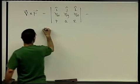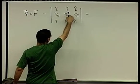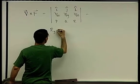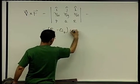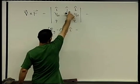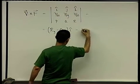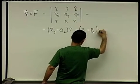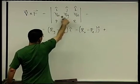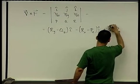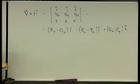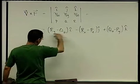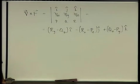Expanding the determinant: in the i component we get r_y minus q_z. In the j component we get minus (r_x minus p_z). And the k component is q_x minus p_y. This is the rotor or curl of a vector field f. To write it like this, we need to assume that f has partial derivatives.